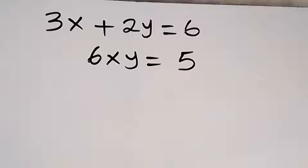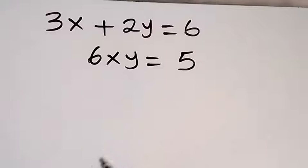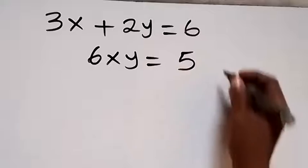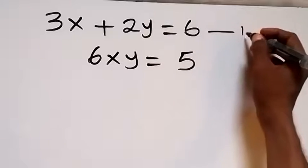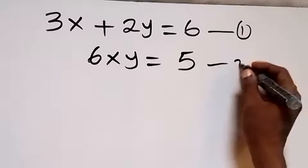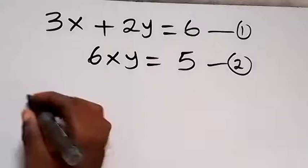Hello, you are welcome. How to solve this problem: 3x plus 2y equals 6, and 6xy equals 5. Let's label this as equation 1 and this as equation 2.